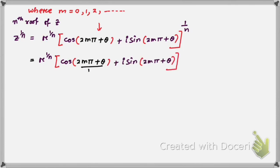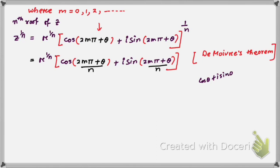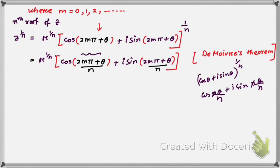Now applying De Moivre's theorem — which we discussed in the last class, link is in the description box — that theorem states: (cos θ + i sin θ)^n = cos(nθ) + i sin(nθ). Since we are taking power 1/n, the angle becomes θ/n, giving cos(θ/n) + i sin(θ/n). Similarly, with 2mπ + θ, we divide by n.